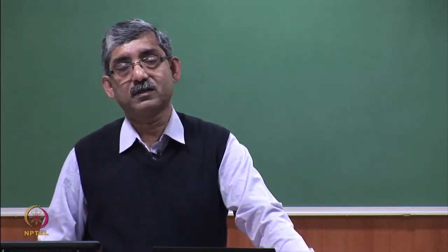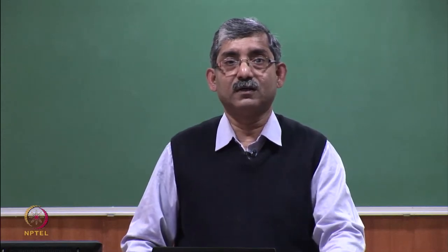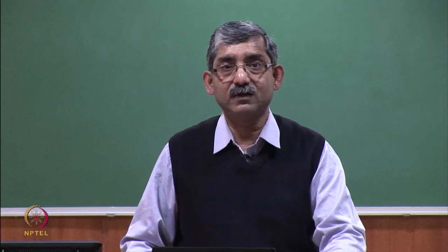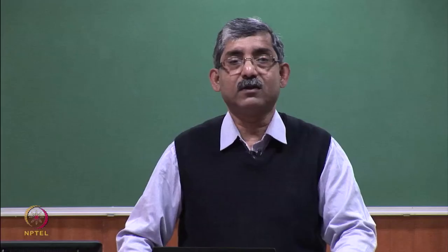So this particular sports textile should take all these things into account. On the other hand, active sportswear — these are basically worn for very short duration. Maximum physical performance should be achieved and this particular sports textile should assist in getting the physical performance. As this type of textile is worn for short duration, it is designed for constant climatic conditions, maybe few seconds or maybe few minutes, so the climatic condition may not change.